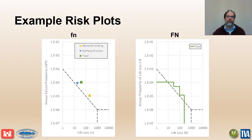Here are the results for the event tree example. The little fn plot is typically portrayed as a collection of points representing each of the individual potential failure modes and the total risk estimate. The big fn plot is typically portrayed as a step function for the total risk estimate, though risk estimates for individual potential failure modes can also be calculated and portrayed on the big fn plot.